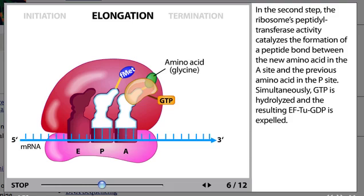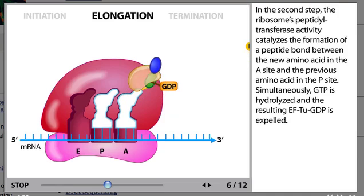In the second step, the ribosome's peptidyltransferase activity catalyzes the formation of a peptide bond between the new amino acid in the A site and the previous amino acid in the P site. Simultaneously, GTP is hydrolyzed and the resulting EF-Tu-GDP is expelled.